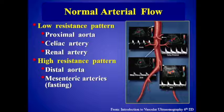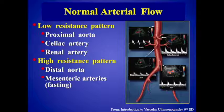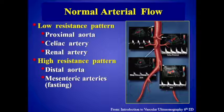Normal flow patterns in the mesenteric circulation typically run in two flavors: a low resistance pattern in the proximal aorta that feeds the celiac and renal arteries, and a high resistance triphasic pattern in the distal aorta that feeds the lower extremities. The flow in the mesenteric arteries is typically very high resistance in the fasting state, and we use that as a check to know if patients are fasting — if they don't have a high resistance pattern in the mesenteric arteries, they probably had breakfast.